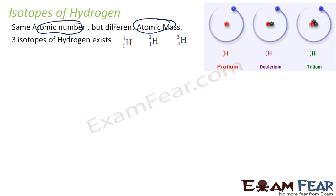For hydrogen there are three isotopes: protium, deuterium, and tritium. For protium, if you see, there is one proton and one electron.